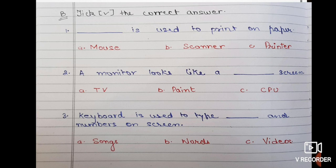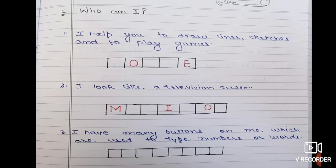Part C is who am I. Now some sentences are given here and you have to complete the word. Some, as you can see, some letters are missing. First one is I help you to draw lines, sketches, and to play games, dash O dash dash E. Second one is I look like a television screen, M dash dash I dash O dash.